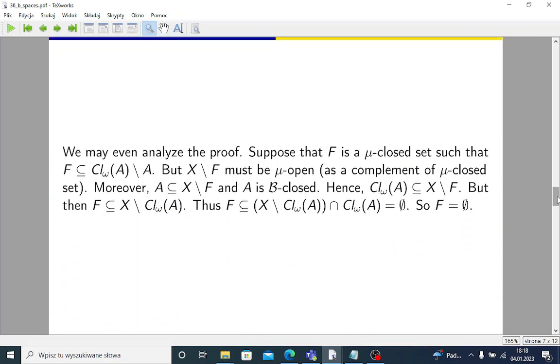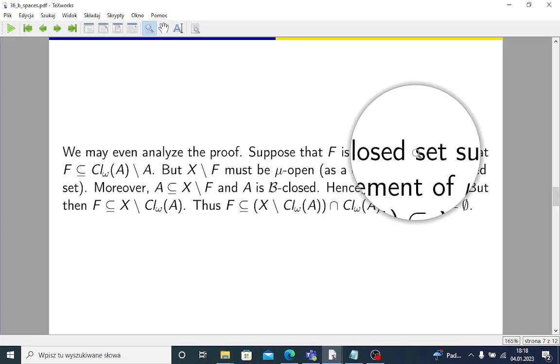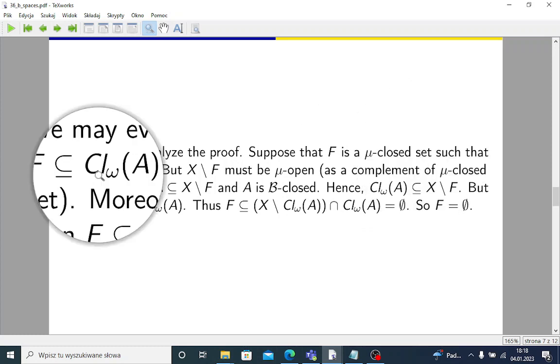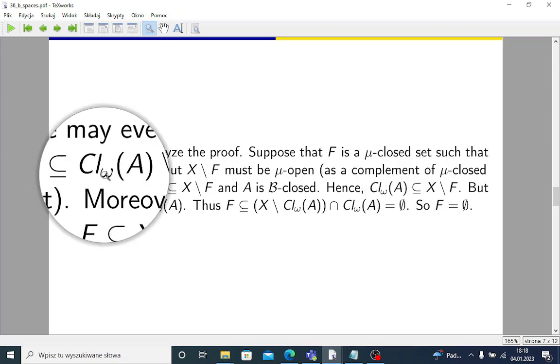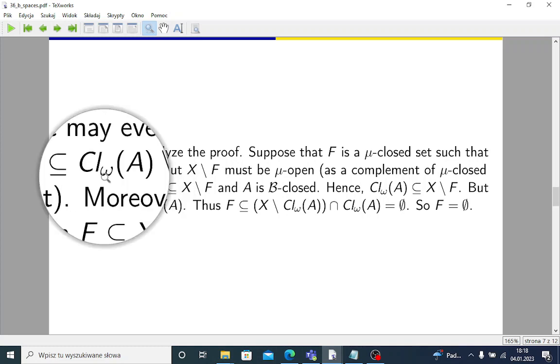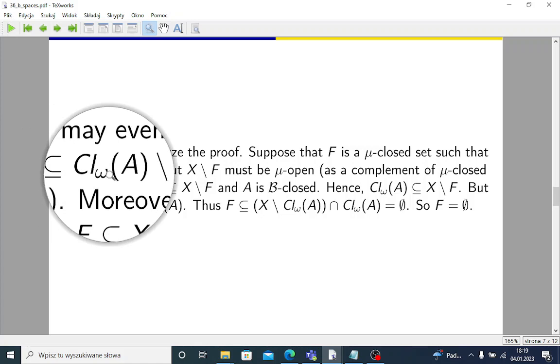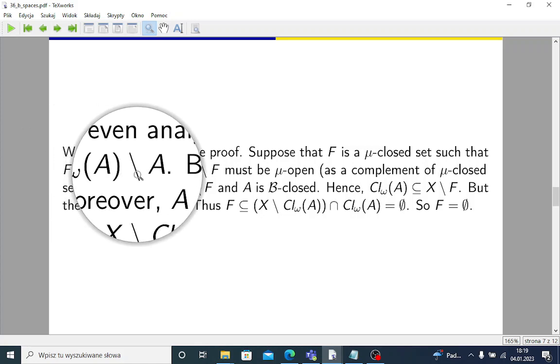Suppose this will be indirect reasoning. Suppose that F is a μ-closed set such that it's contained in omega closure of A minus A. Besides, there is a mistake in the paper. They used μ here, but from the context, it is clear that it should be omega closure of A minus A.